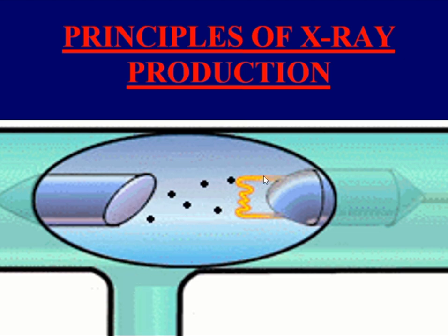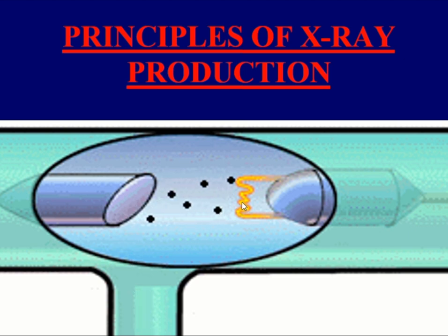We can see that there is a filament here. This filament is heated up, and due to thermionic emission, electrons are emitted from the filament. To produce x-rays, we need these electrons to accelerate towards the target material. We provide a high voltage between the target material and the filament. The positive terminal of the battery is connected to the target material, so the negatively charged electrons accelerate towards it. When these electrons interact with the atoms of the target material, x-rays are produced.